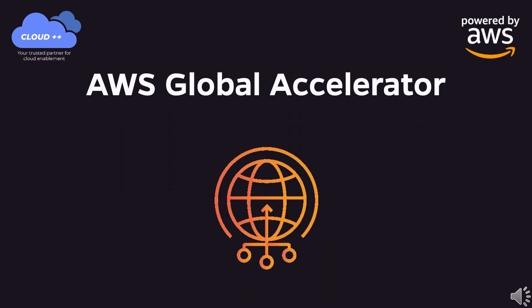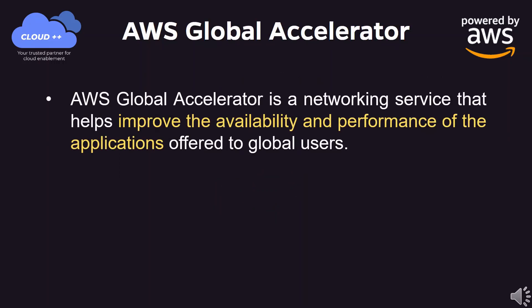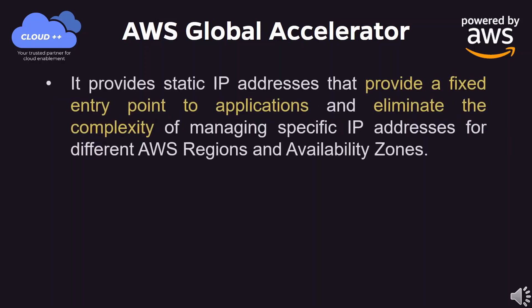AWS Global Accelerator is a networking service that helps improve the availability and performance of applications offered to global users. It provides static IP addresses that provide a fixed entry point to applications and eliminate the complexity of managing specific IP addresses for different AWS regions and availability zones.